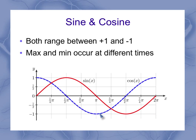They reach that maximum or minimum value at different times in the cycle, but we still have a maximum of 1 and a minimum of minus 1 for both the sine curve and the cosine curve.